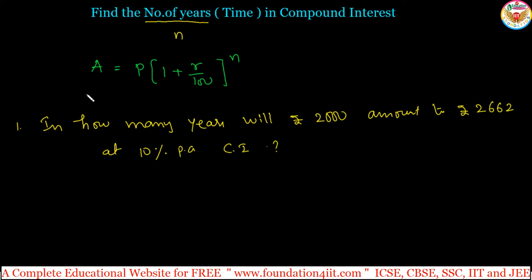We have to calculate this now. In how many years will this principal amount to 2662? The rate of interest is 10%. Let us apply these values in the formula. P is given as Rs. 2000, and A equals 2662. R equals 10% per annum, and we have to calculate the n value.